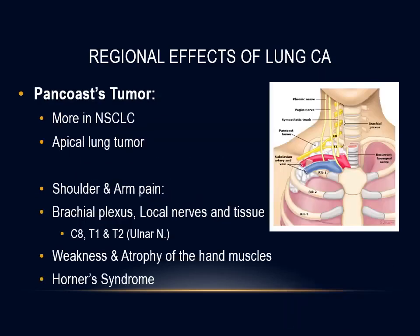Lung cancers arising in the superior sulcus can cause Pancoast syndrome, manifested by pain in the shoulder and less commonly in the forearm, scapula, and fingers by involving the brachial plexus and local nerves — particularly the C8, T1, and T2 distribution of the ulnar nerve. It can also be associated with Horner syndrome, bony destruction, and atrophy of the hand muscles. It is more common in non-small cell carcinoma and only rarely seen in small cell carcinoma.